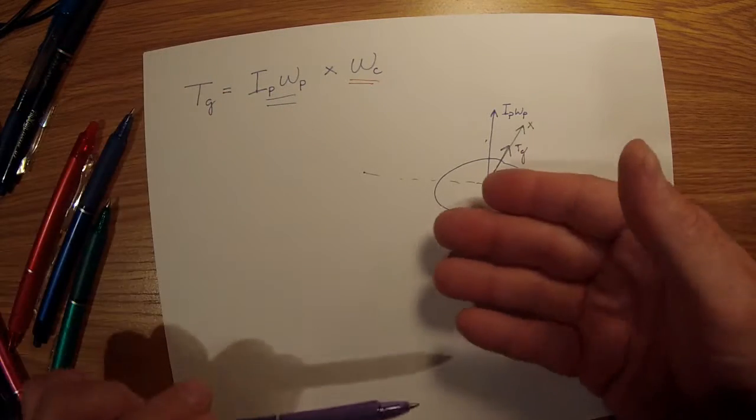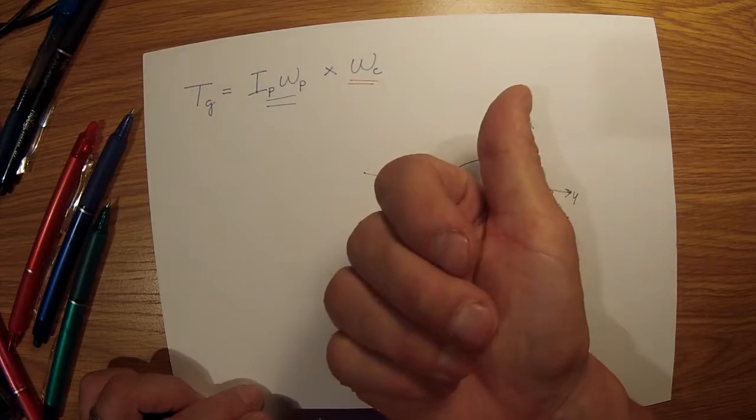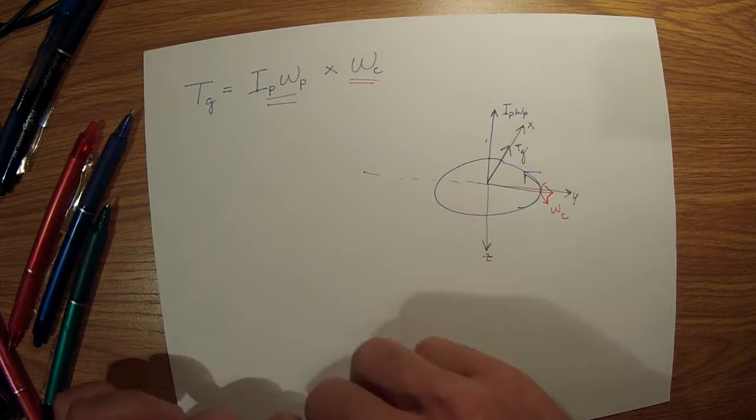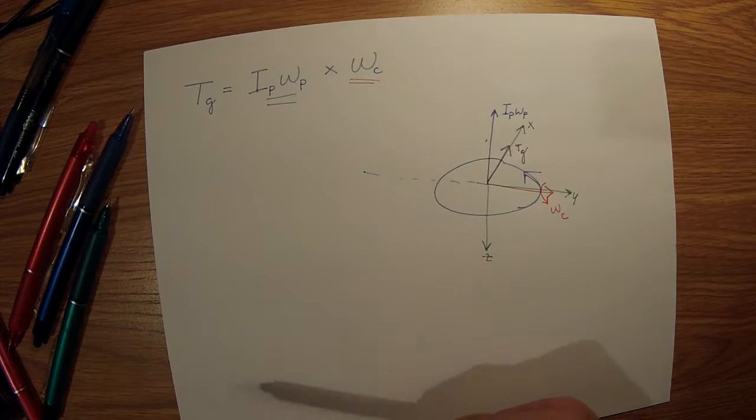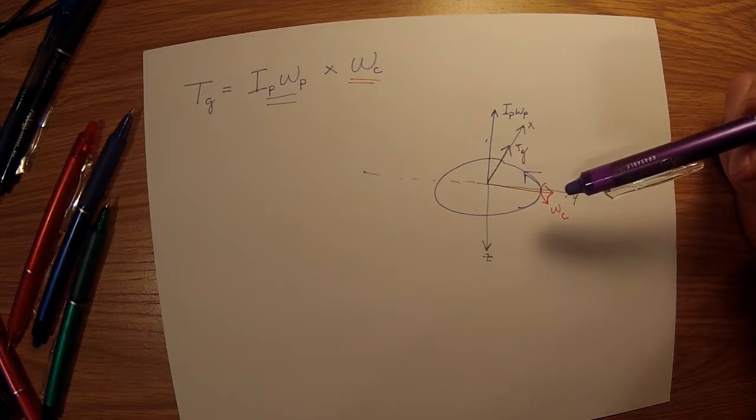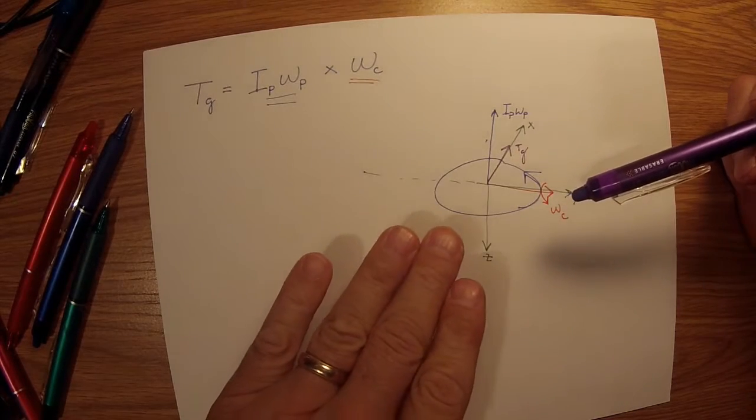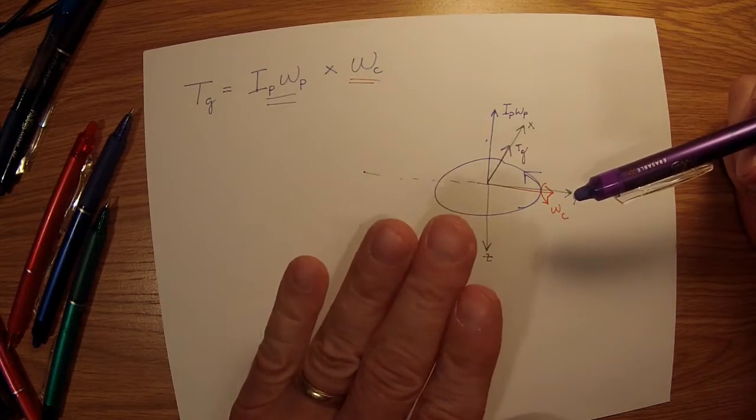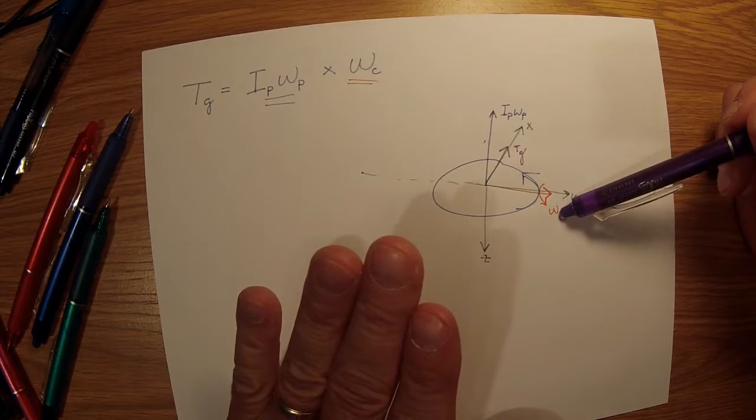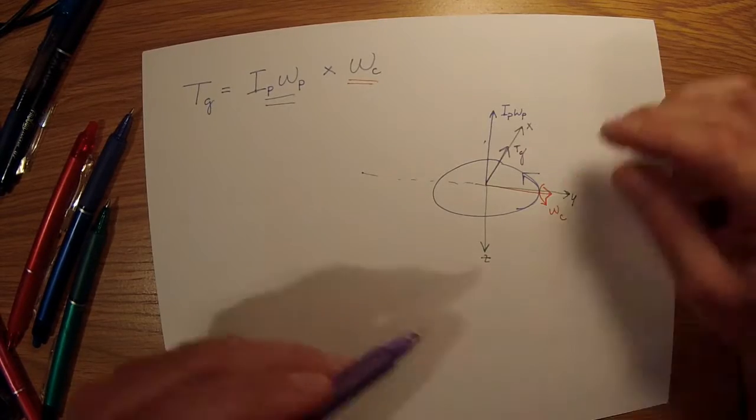The propeller spinning, we impart an angular velocity to it about the Y axis, and a torque is generated that wants it to rotate about the X axis. That's the effect, the gyroscopic effect of a spinning propeller as its plane of rotation changes with an angular velocity Omega C.